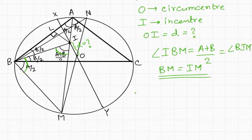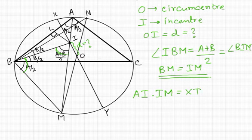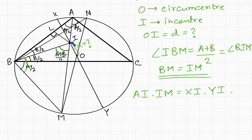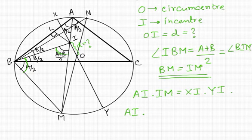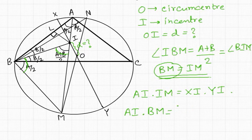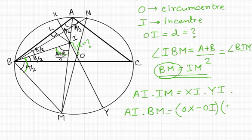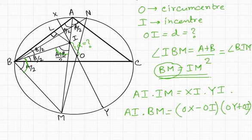For this circle we can write: AI · IM = XI · YI. Since IM equals BM, this becomes AI · BM = XI · YI.